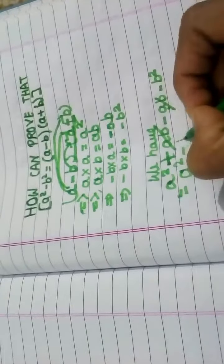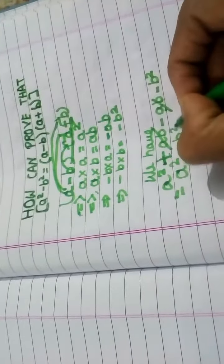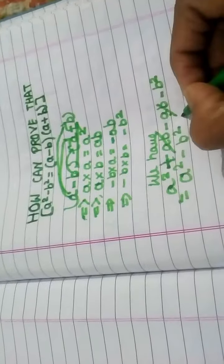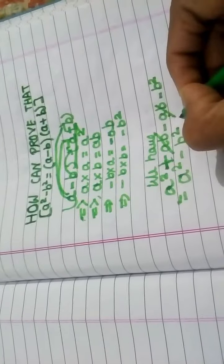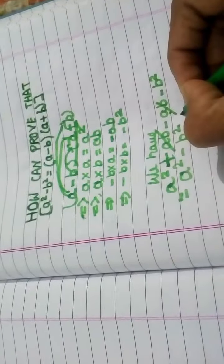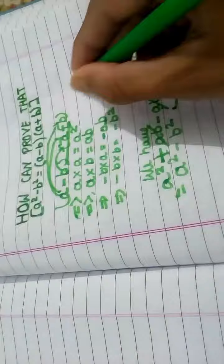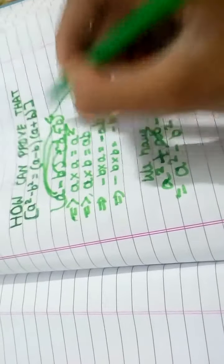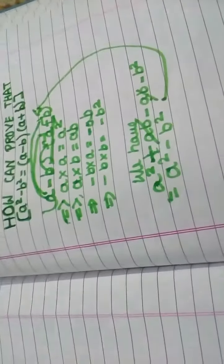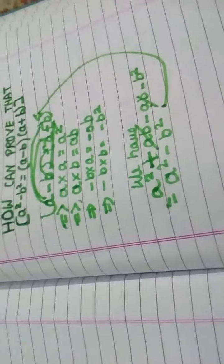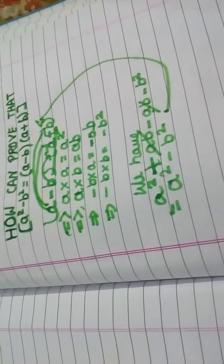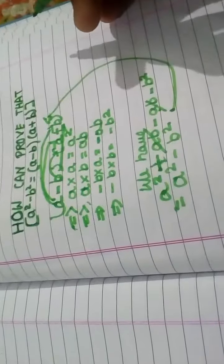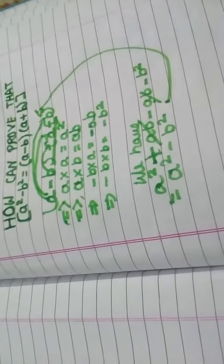And we have proved that a squared minus b squared equals (a minus b) into (a plus b). Thank you for watching — please subscribe and like this video if you liked it.